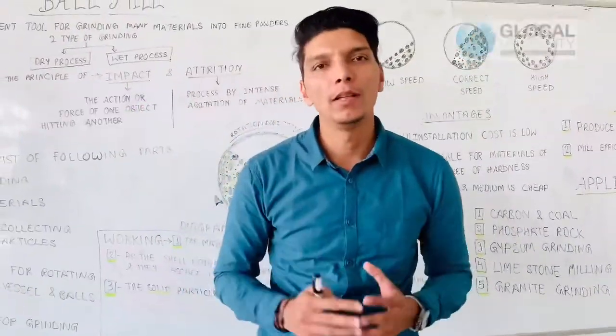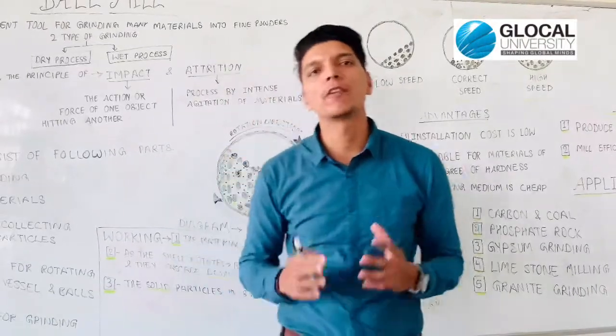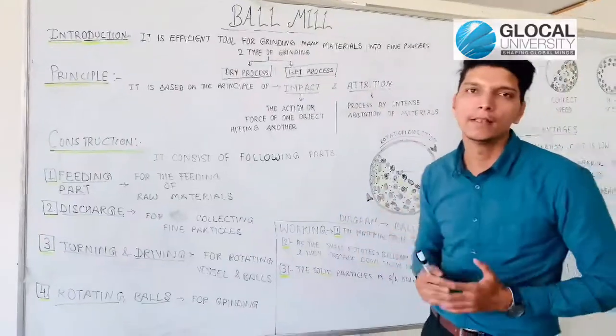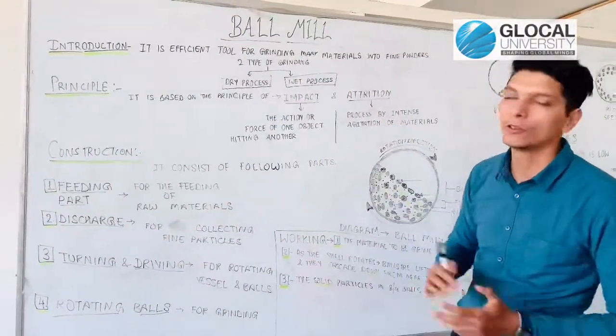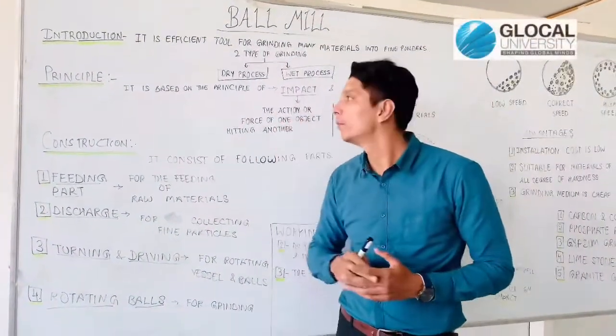Ball mill is the apparatus which is used for grinding purposes. Basically two types of grinding: dry process and wet process. Now we are going to discuss its principle.